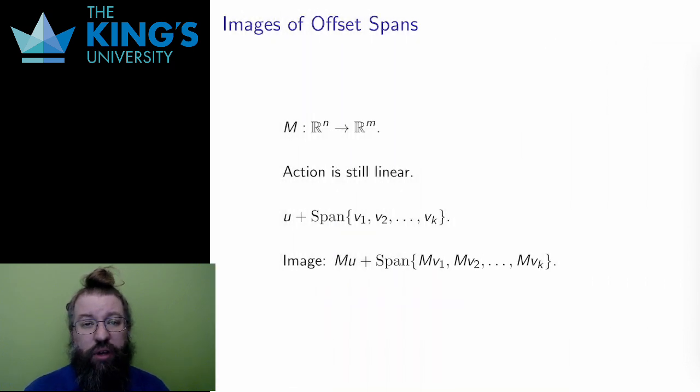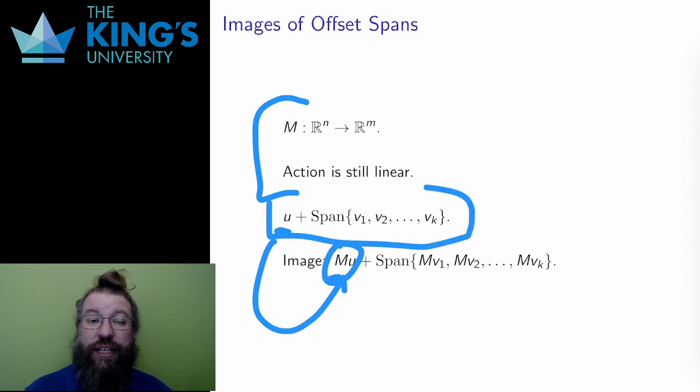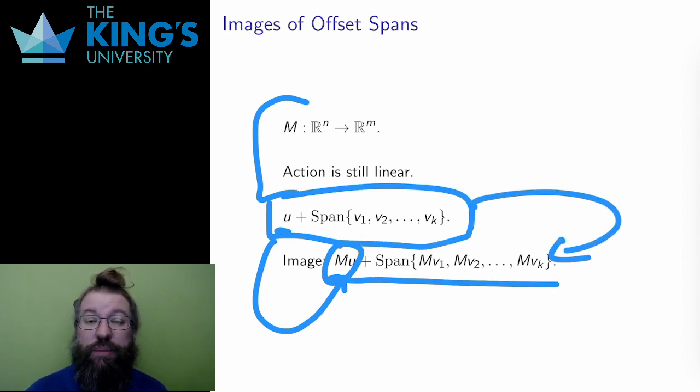What if the span is offset? Well, an offset vector is just adding another vector, and the action of M is still linear. Therefore, there will just be a new offset, and the new offset will just be the matrix applied to the old offset. For an offset span, the matrix sends it to a new offset span, calculated by just applying the matrix to all the individual vectors that describe the offset span.